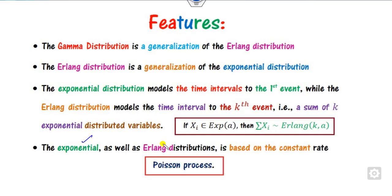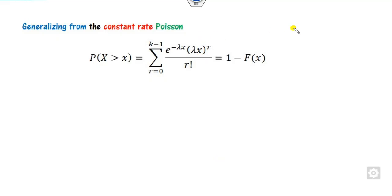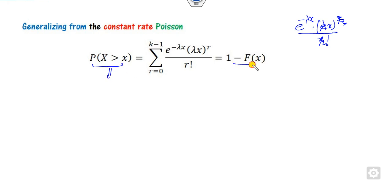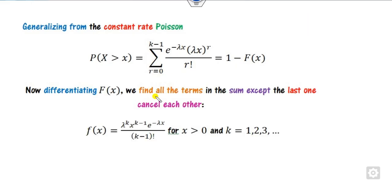The exponential and Erlang distributions are both based on the constant-rate Poisson process. The Poisson PMF is E raised to minus Lambda, times Lambda to the power R, divided by R factorial. If you differentiate the survival function 1 minus F(x) with respect to R, all terms cancel and you obtain the PDF of the Erlang distribution.